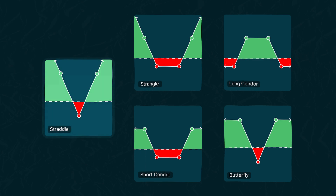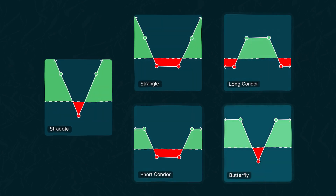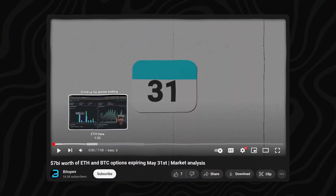Let's get into what we're going to be looking at today. We're going to be looking at straddles, strangles, iron condors, and butterflies. The iron condors can be both long or short — we're going to be taking a look at those. This is why it's five, because there are actually four strategies. The straddle and strangle can also be long or short, but we're going to be focusing on long straddle and long strangle. Timestamps are also in the description.